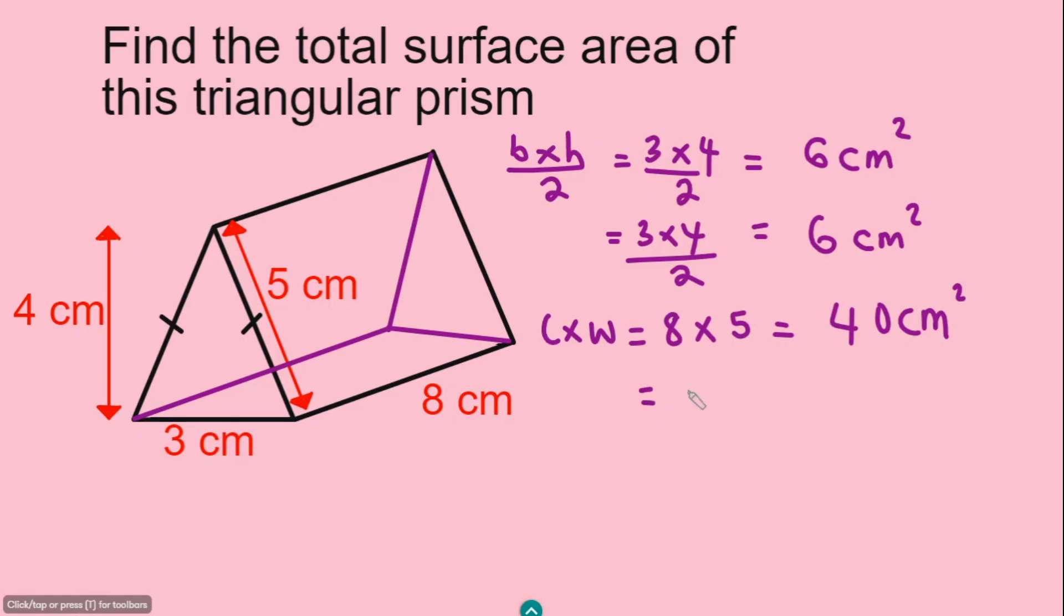So we can also do the same. The area of the rectangle at the back is going to be 8 times 5, and that's going to give you also 40 cm squared.